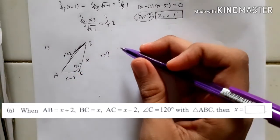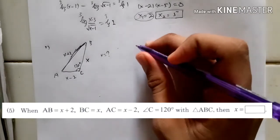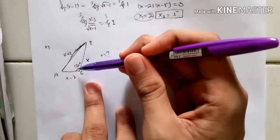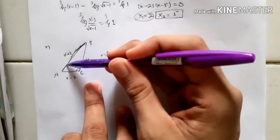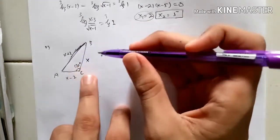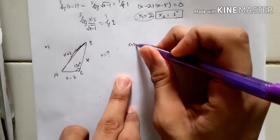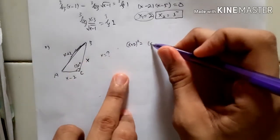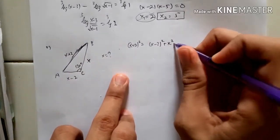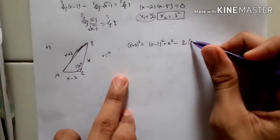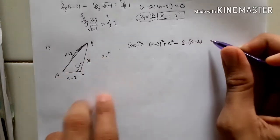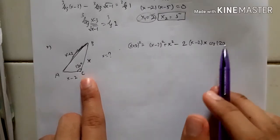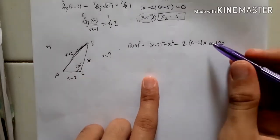Here we can use the cosine formula. The cosine formula says you look at the angle and the side in front of this angle, so you square that side. That gives us: (x minus 2) squared equals x squared plus (x minus 2) squared minus 2 times (x minus 2) times x times cosine 120. And cosine 120 is minus one half.